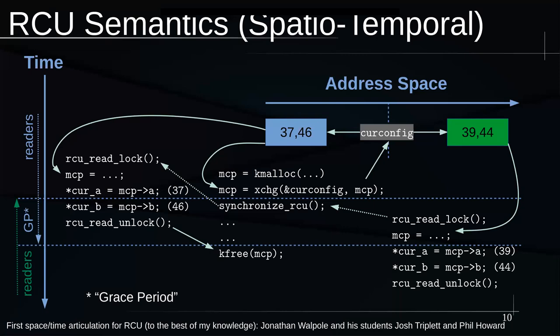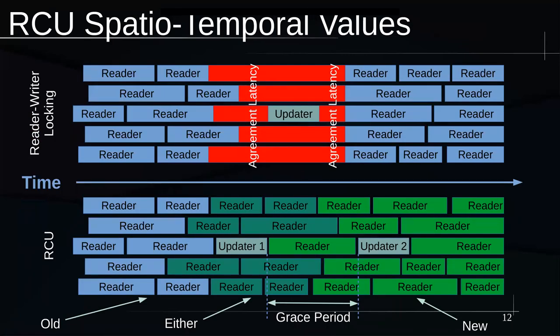Mapping that back: readers in blue are guaranteed to see the old value. Readers in green are guaranteed to see the new value, and the greenish-blue color in between are ones that might see one or the other. But once a given CPU or thread starts seeing the new values, that CPU or thread will see the new values forever after. We don't know ahead of time which reader will start seeing new values, but once it starts seeing them, it'll see them forever.